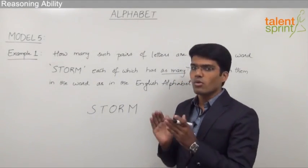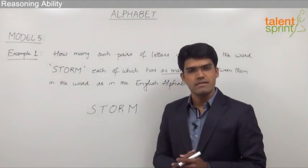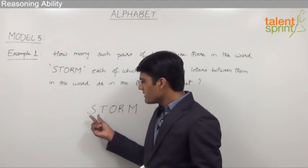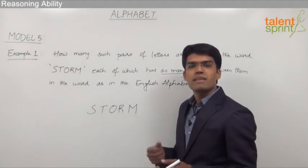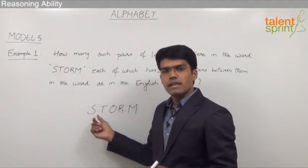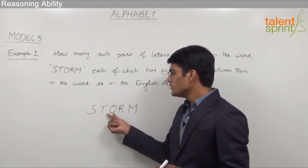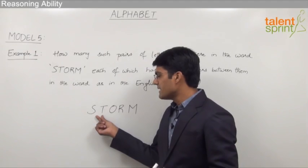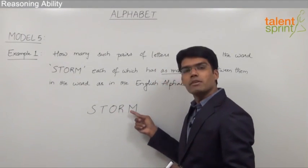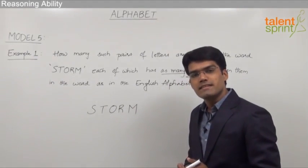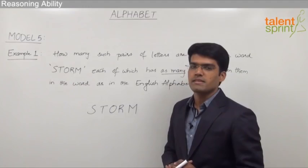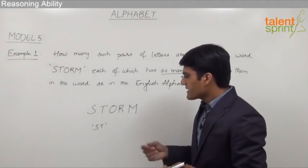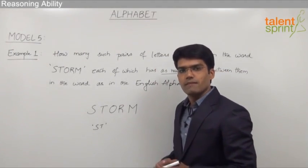The idea here is to find out all such possible pairs which have the same number of letters between them in the given word as in the English alphabet. We have to verify each letter with every other letter. Starting from S, reading the English alphabet: S, T, U, V, W — the only matching pair is S and T, because the remaining letters U, V, W don't match any of the given letters. So S and T is a correct pair.